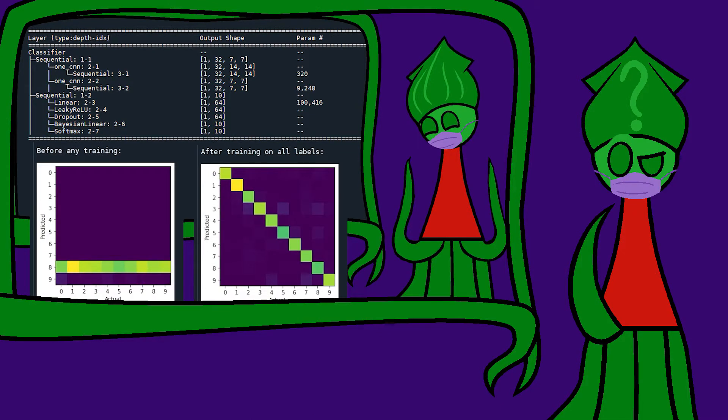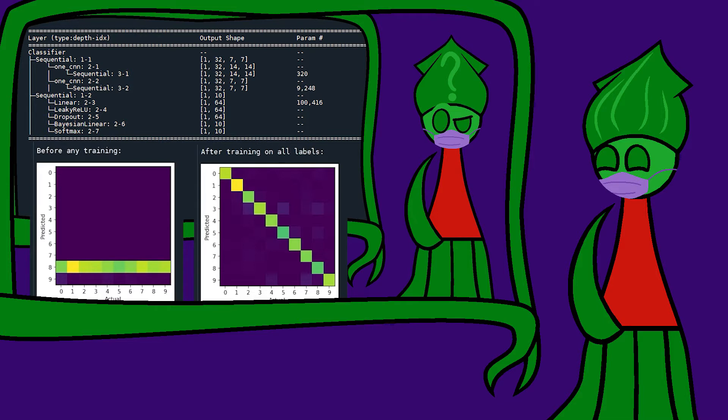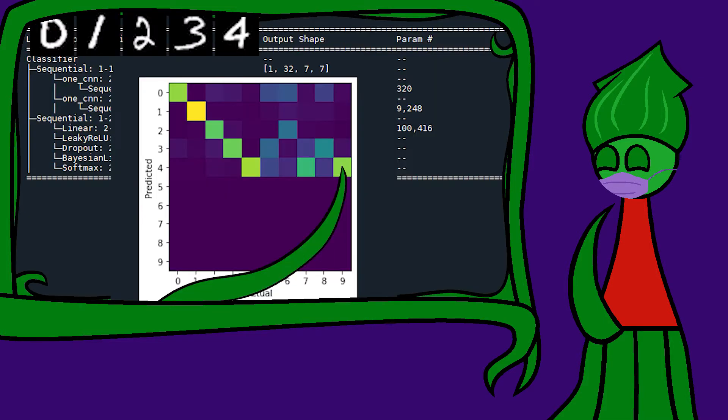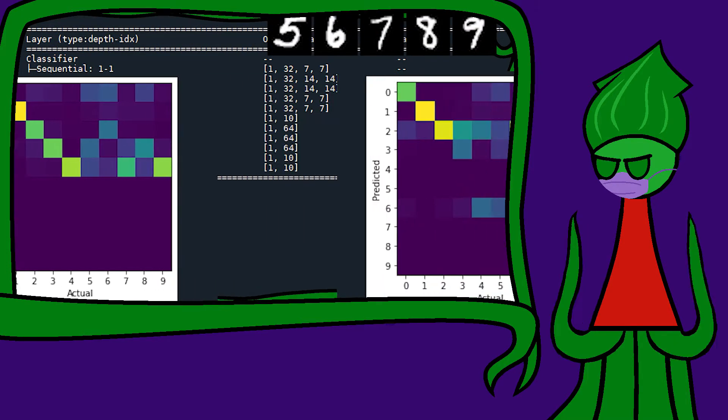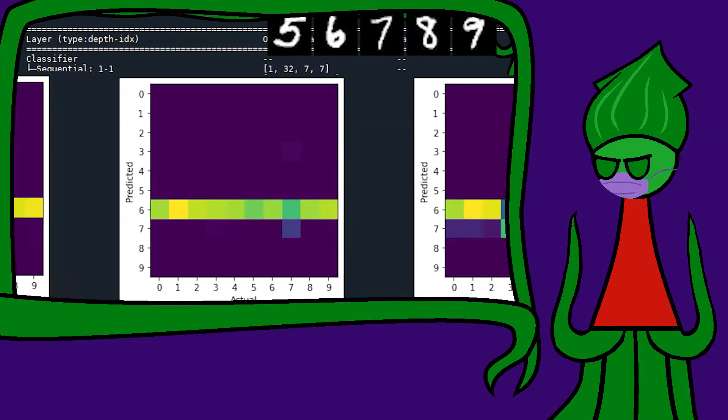You haven't forgotten about catastrophic forgetting, have you? A convolutional neural network can classify the MNIST digits pretty well, but if you only train the model on the digits 0 through 4 and then the digits 5 through 9, it forgets how to identify 0 through 4.